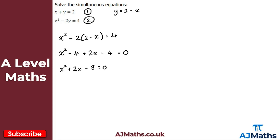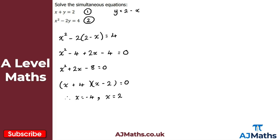I check whether this can be factorised — and it can. I need two numbers that multiply to give minus eight and add to give two, which is plus four and minus two. So I get (x + 4)(x - 2) equals zero. This gives two x solutions: x plus four equals zero meaning x equals minus four, and x minus two equals zero meaning x equals two.